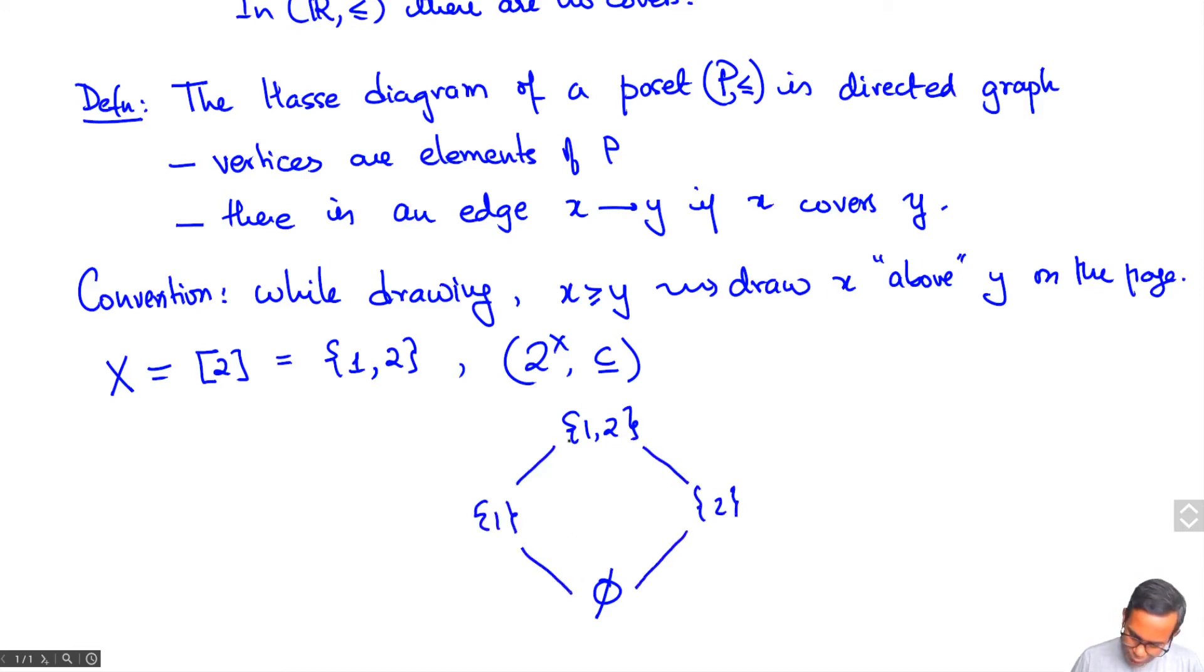The largest is of course the set {1, 2} and then there are two sets of size 1 and we have edges like this. What this is saying is that {1, 2} covers {1}, {1, 2} covers {2}. We don't draw an edge from {1, 2} to the empty set even though {1, 2} is greater than or equal to the empty set. But that's because {1, 2} does not cover the empty set. There are these guys, {1} and {2} which lie in between.